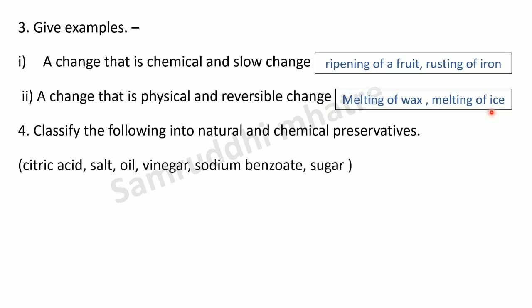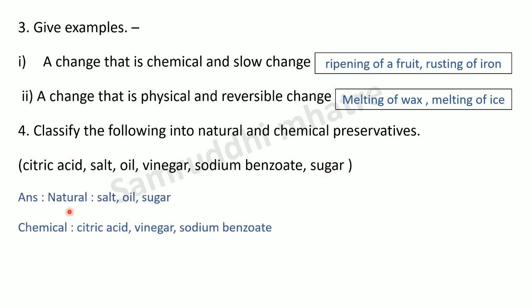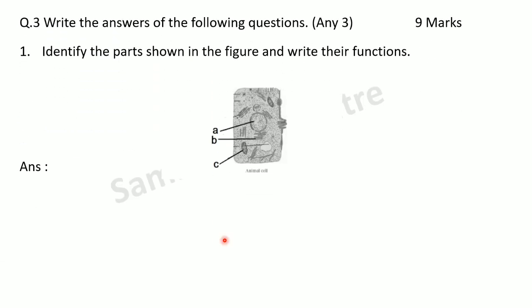Fourth: classify the following into natural and chemical preservatives. The natural preservatives are salt, oil, and sugar. The chemical preservatives are citric acid, vinegar, and sodium benzoate. Then, another question: write the answer to the following — any three for nine marks.